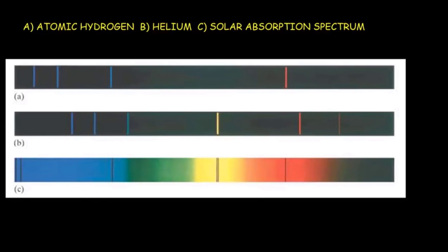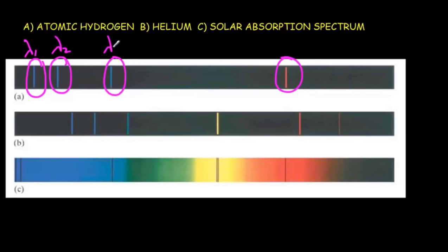If our discharge tube contains hydrogen and you pass the light through a prism or through a diffraction grating so that the different wavelengths of light will separate, you'll get what's called a line spectrum. You'll notice the light coming out of the hydrogen discharge tube has four distinct lines — four distinct wavelengths of light — and we don't get any wavelengths in between them.